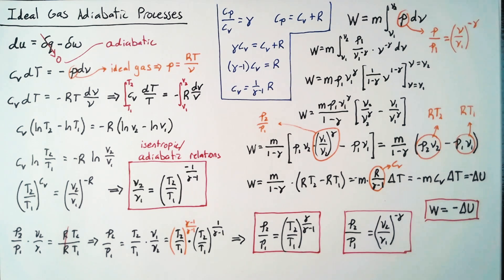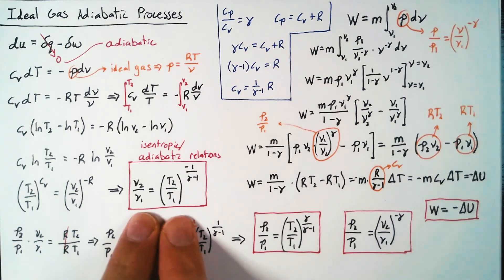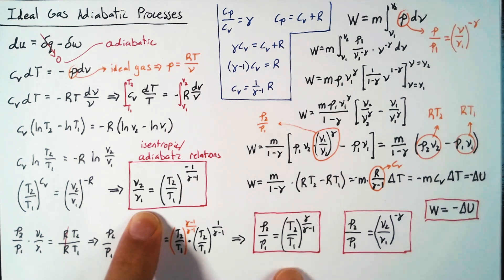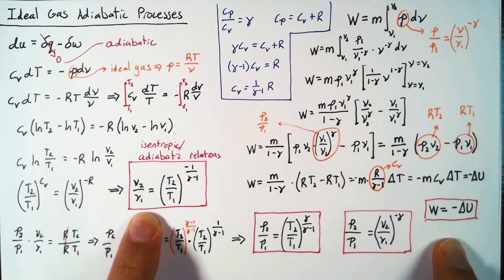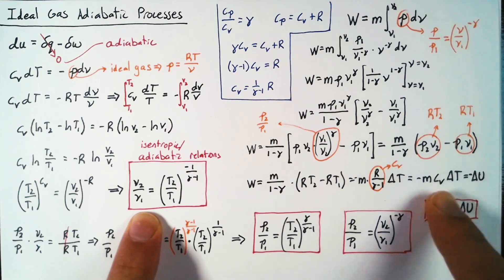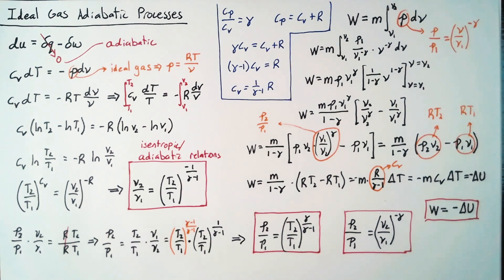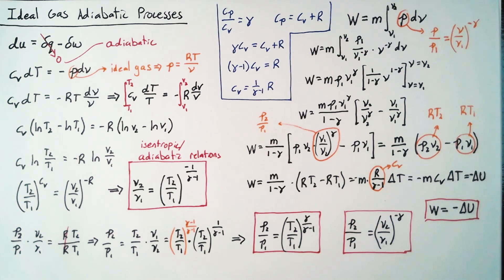To find properties as we move through an adiabatic process, we use the adiabatic relations. But if all we care about is the amount of work, we can go straight to delta U, which we write as cv delta T. This has been a brief overview of adiabatic processes — we'll be using this as we analyze Otto cycles and diesel cycles in the next steps of thermodynamics. I hope this was helpful, and I'll catch you next time.